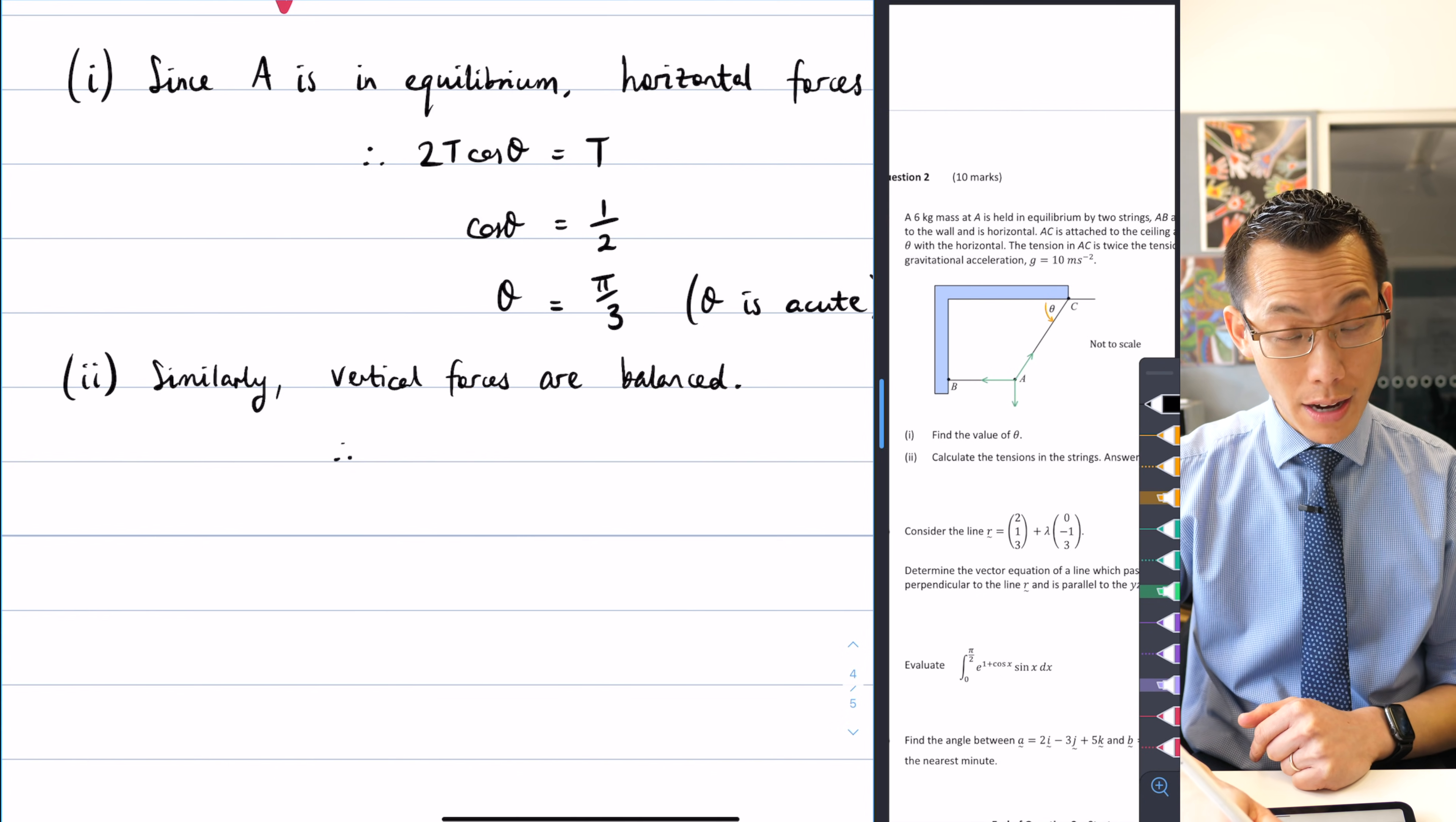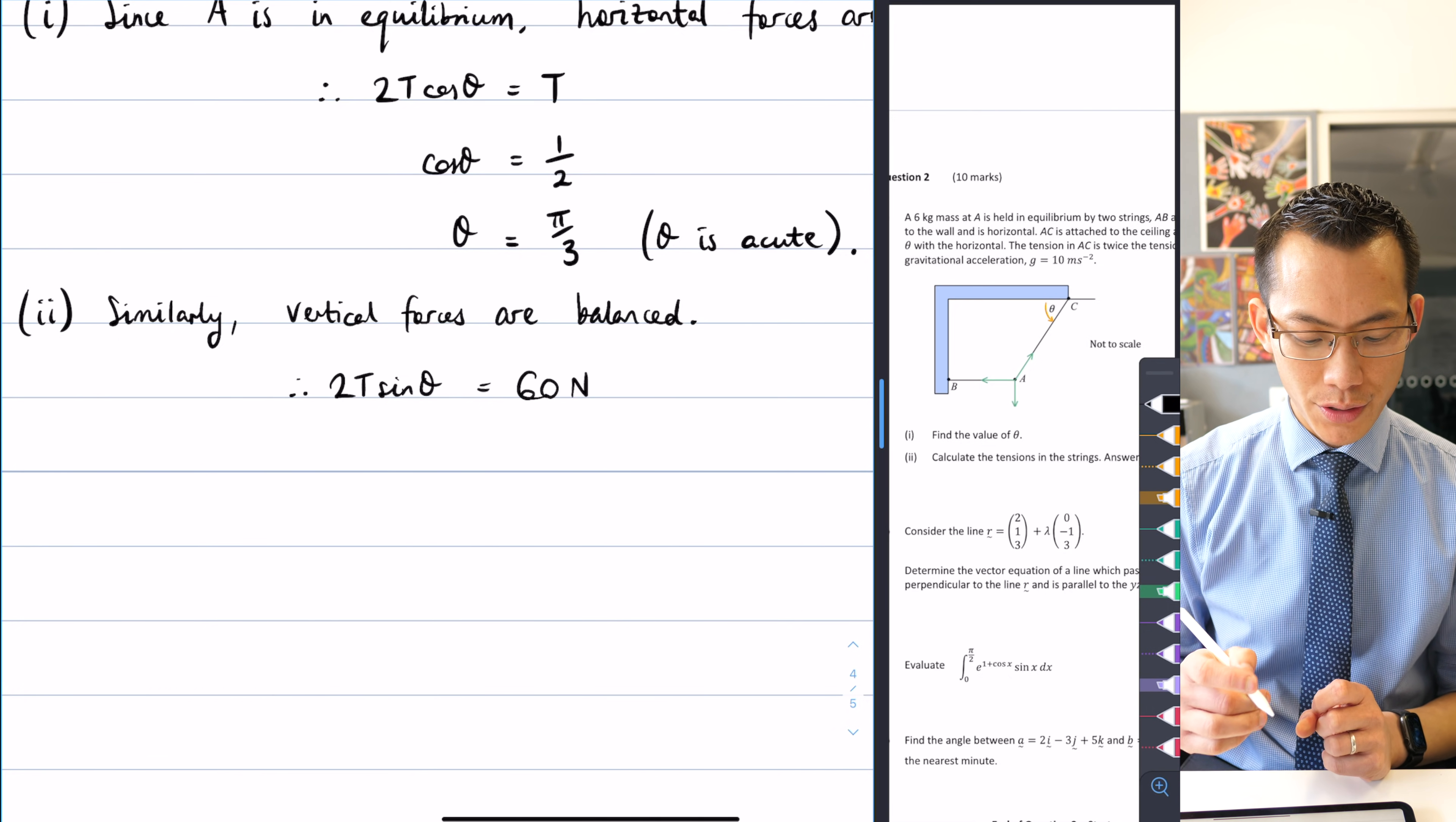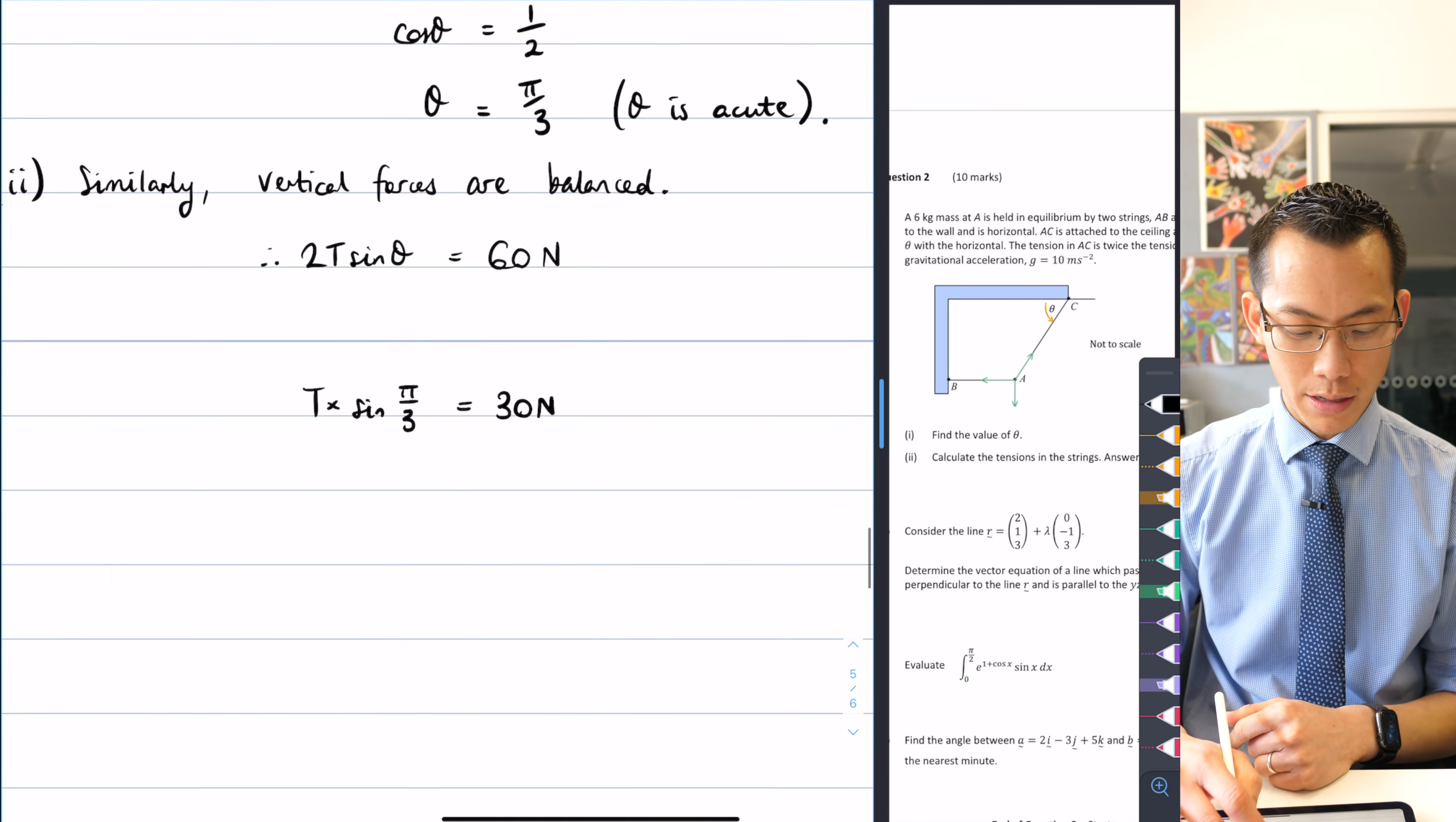Therefore, 2t sine theta is going to be equivalent to the 60 newtons of force coming from gravity. I'm trying to evaluate this for t, so I'm going to divide both sides by 2. And while I'm at it, I actually know what theta is because I worked it out in the previous part, it's pi on 3. So therefore, I'm going to write t times sine pi on 3, and that's going to be equal to 30 newtons.